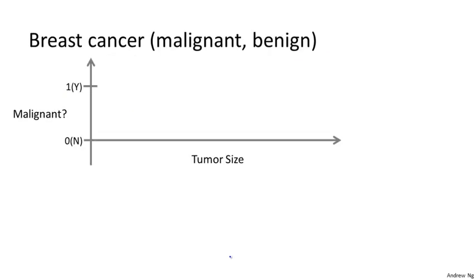Here's another supervised learning example. Some friends and I were actually working on this earlier. Let's say you want to look at medical records and try to predict if a breast cancer is malignant or benign. If someone discovers a breast tumor, a lump in their breast, a malignant tumor is a tumor that is harmful and dangerous, and a benign tumor is a tumor that's harmless. So obviously people care a lot about this.